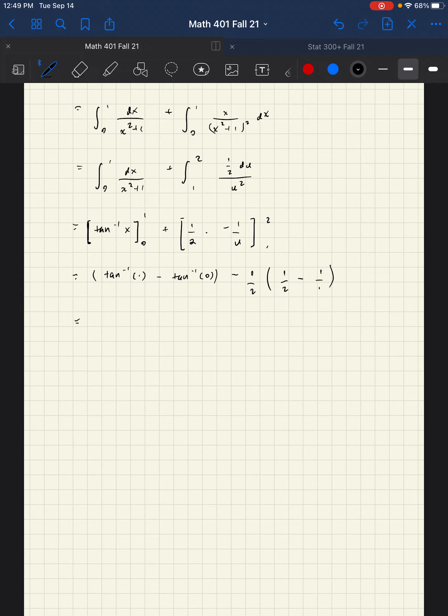Tan inverse of one, remember that has a range of between negative pi over two to pi over two, and that's going to give us pi over four. Minus zero so pi over four, and then one half minus one is negative one half times negative one half is plus one half, one quarter. This is our answer: pi plus one over four.